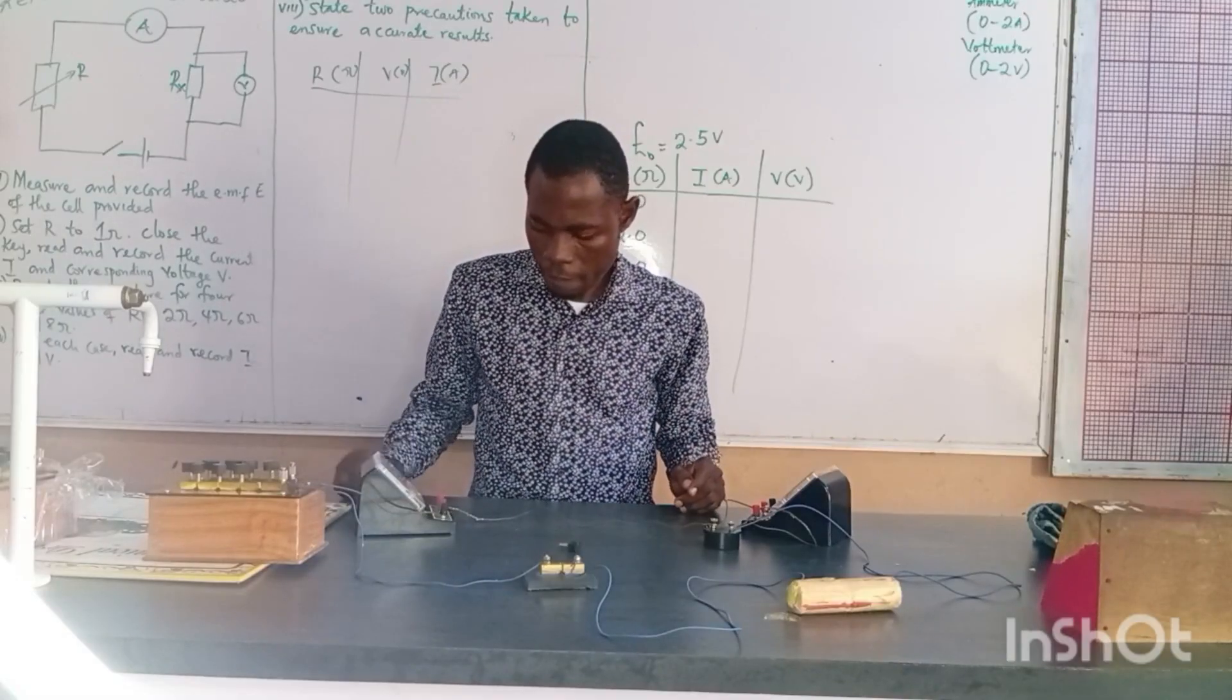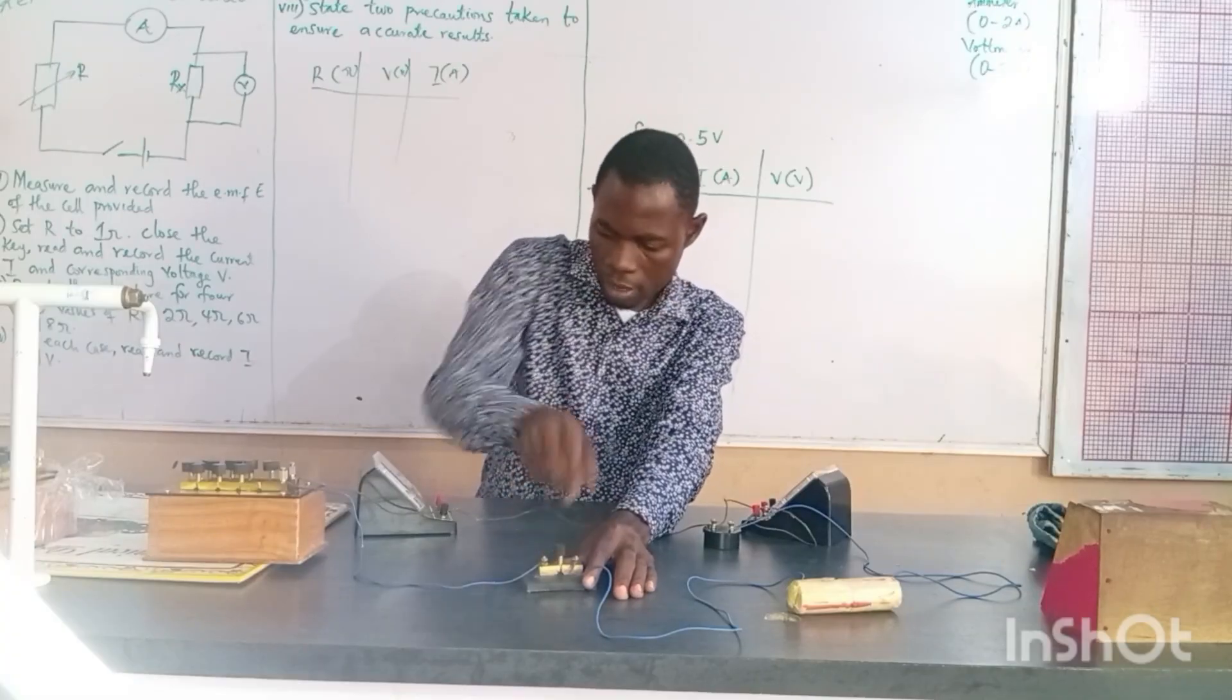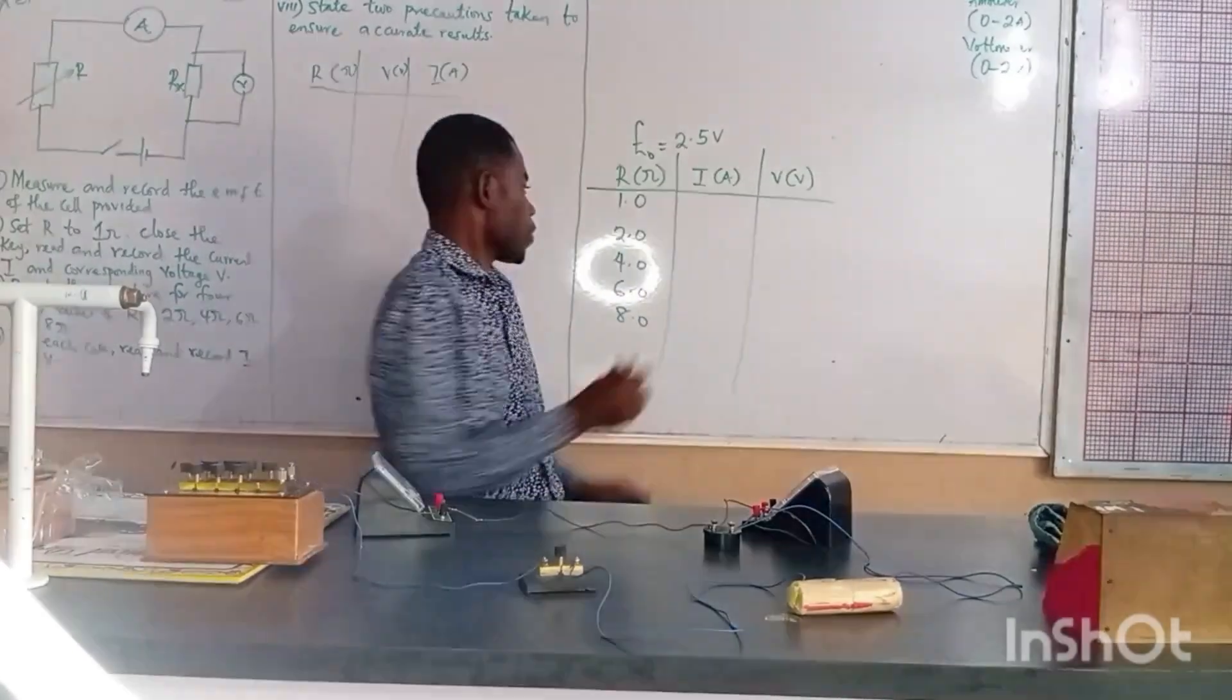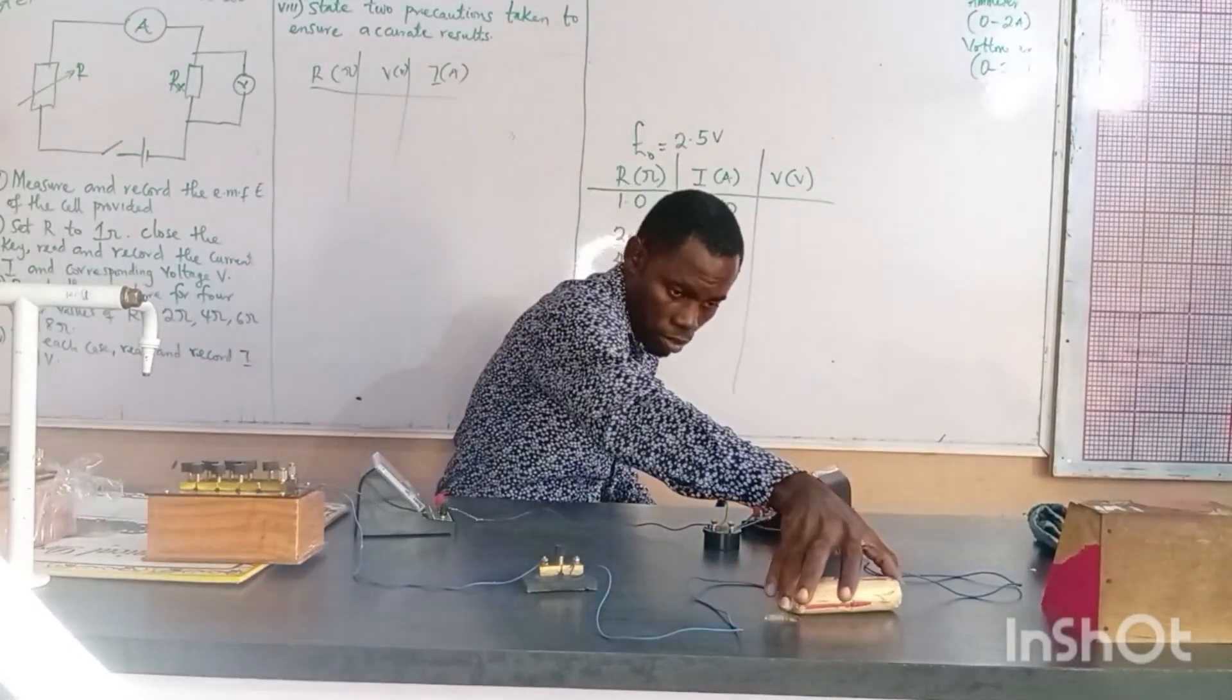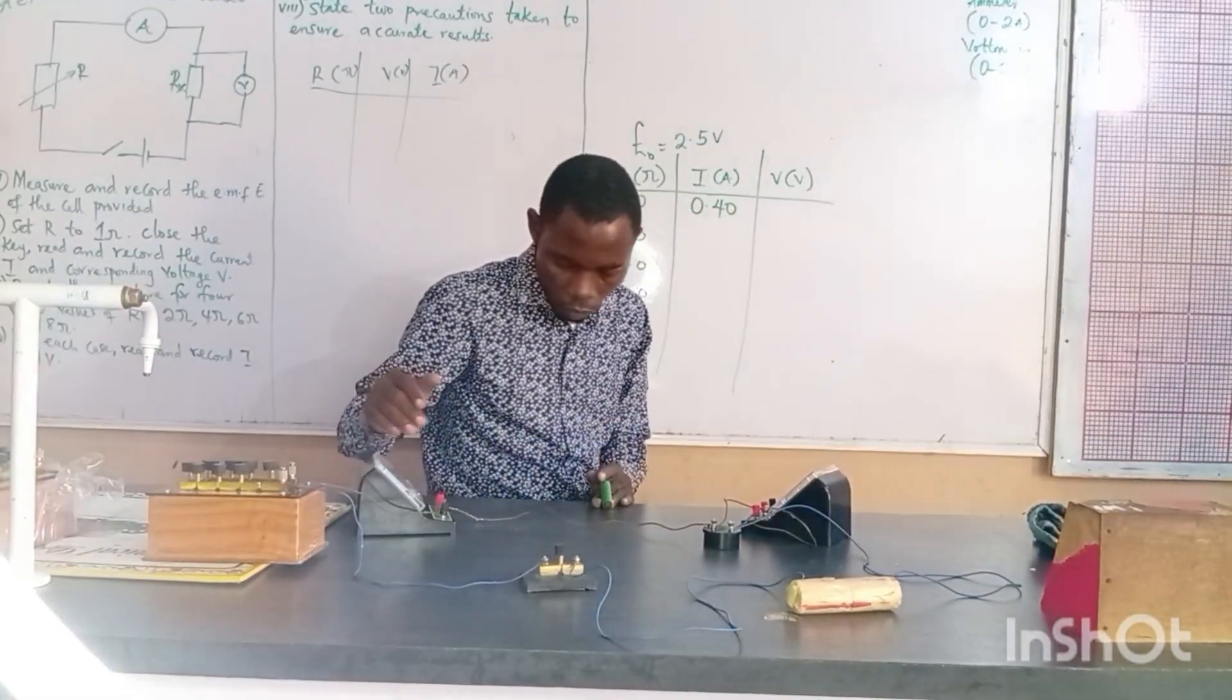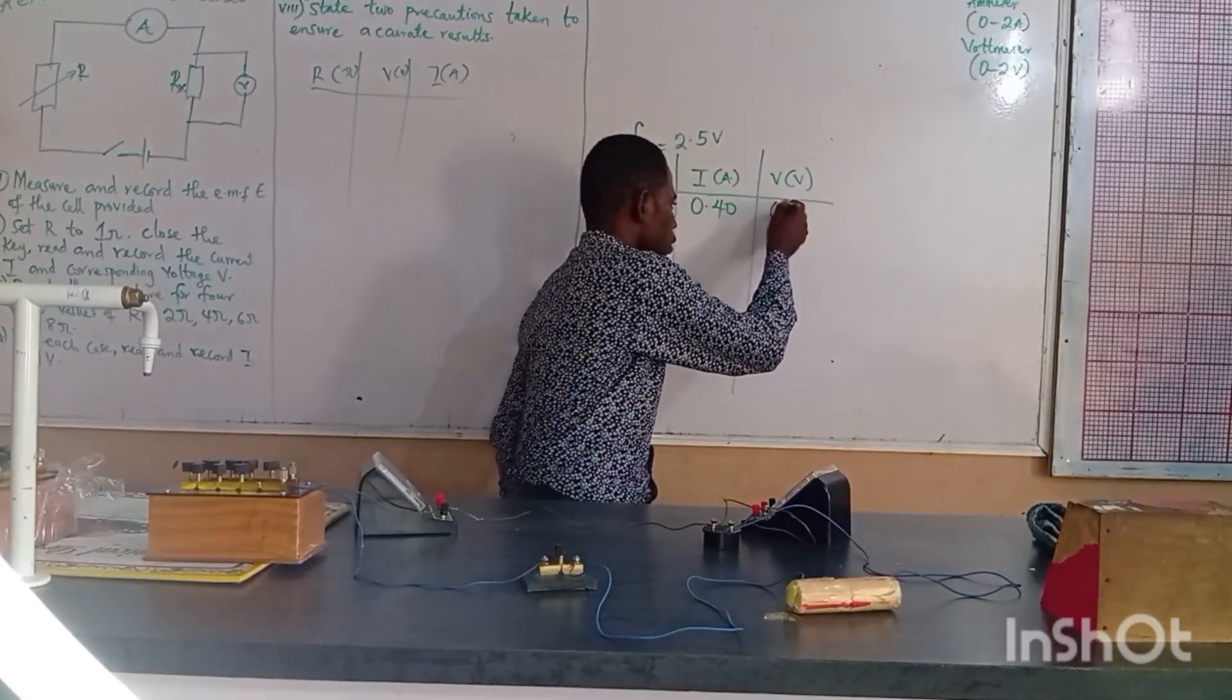On my ammeter I can read 0.40, and on my voltmeter I can read 0.65.